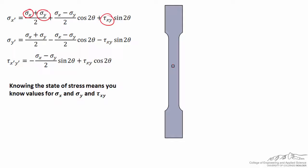When we say we know the state of stress, it means that you know values for sigma_x, sigma_y, and tau_xy at the outset, at a value of theta equals zero.